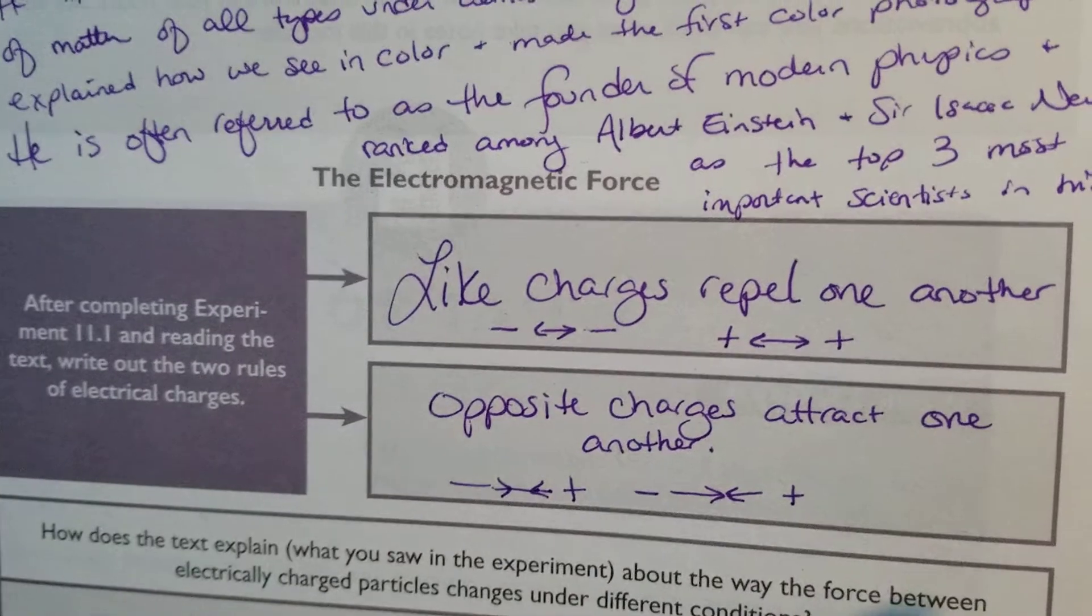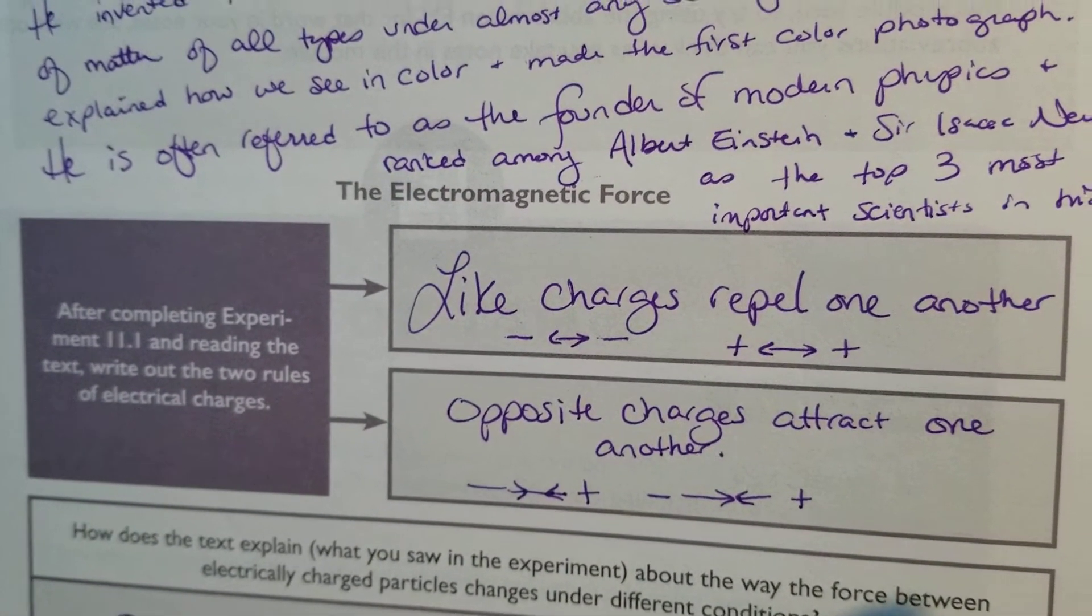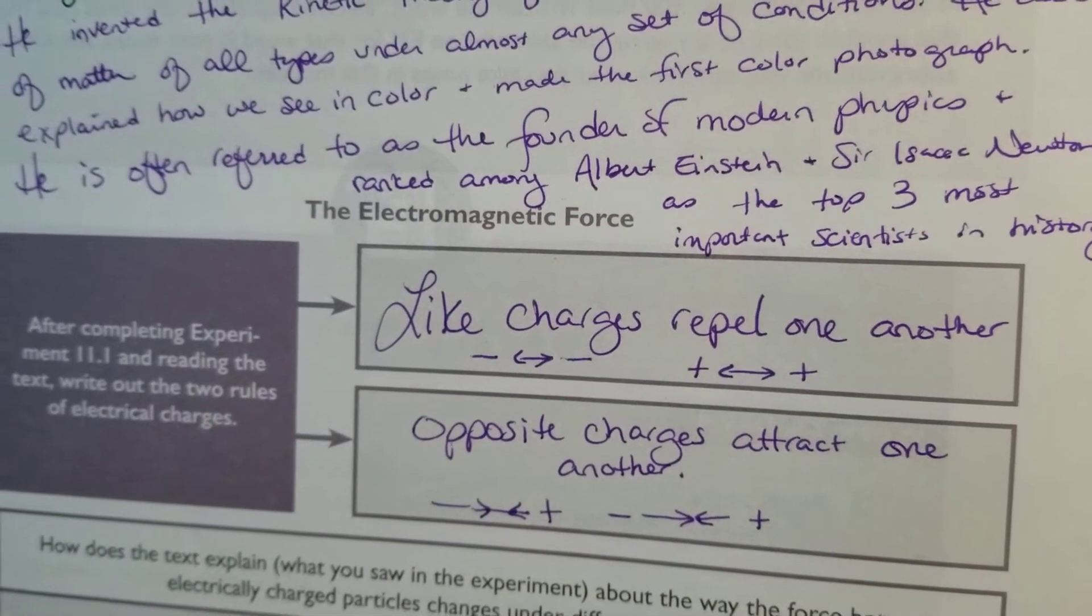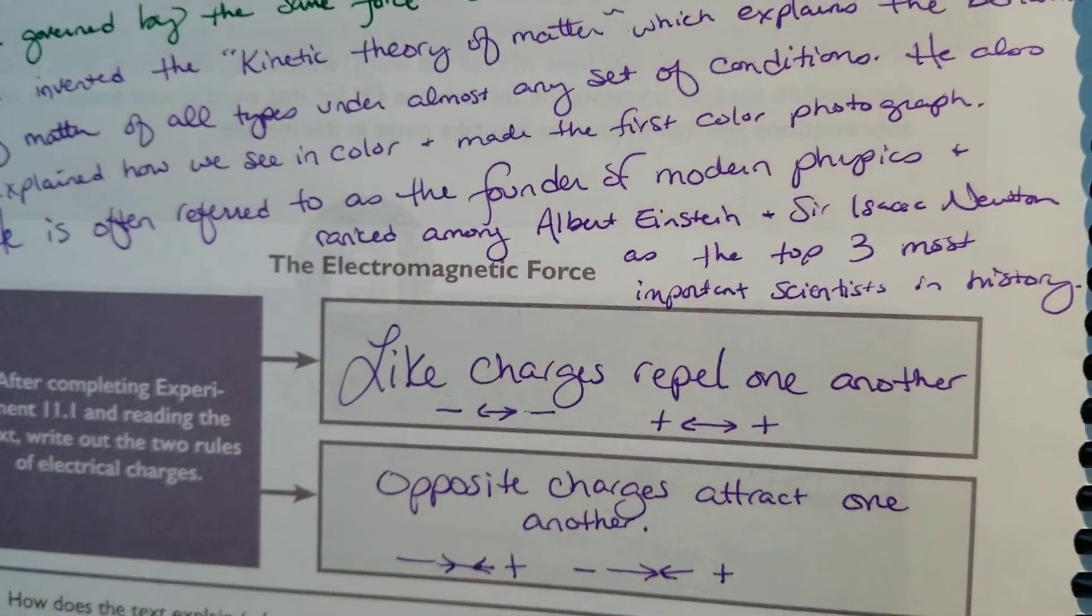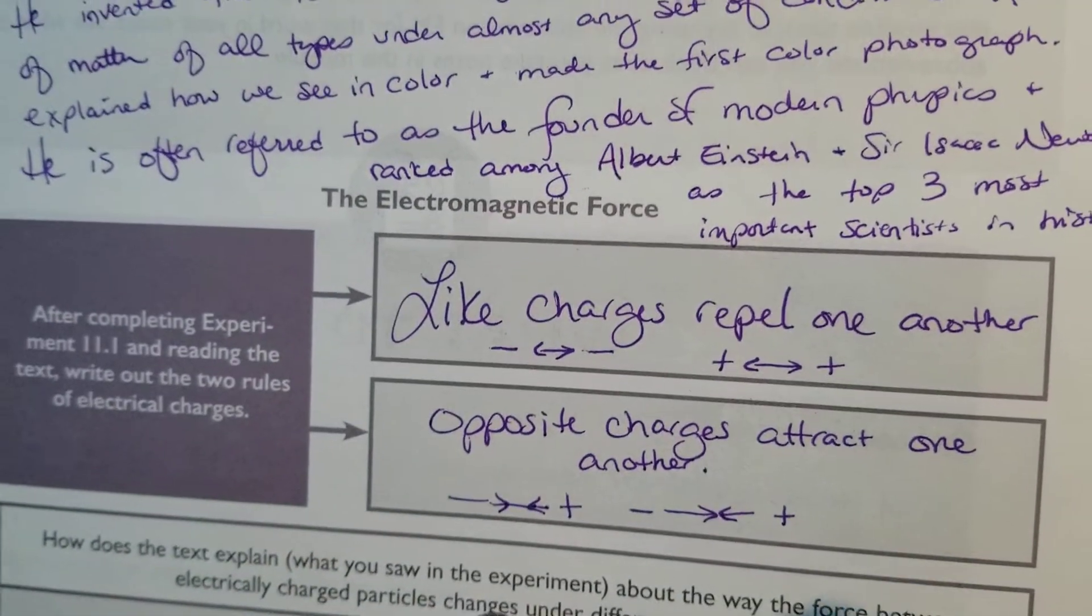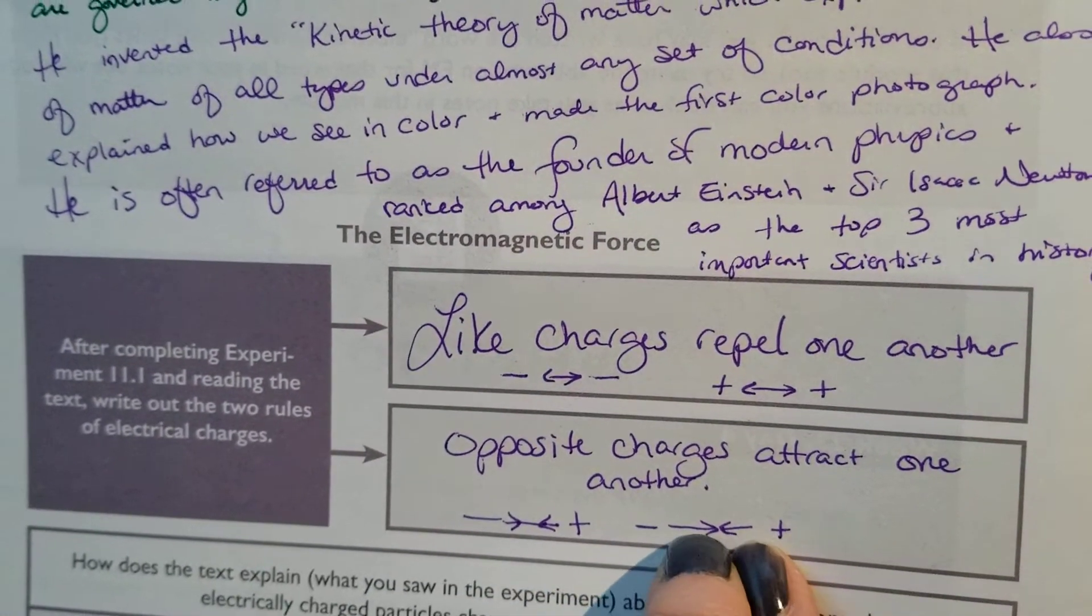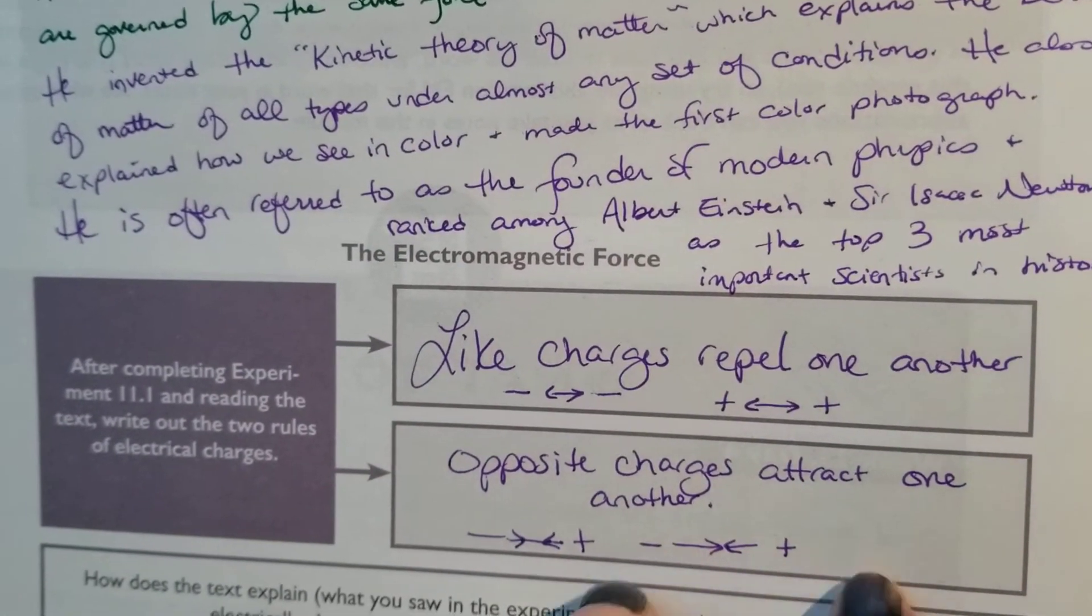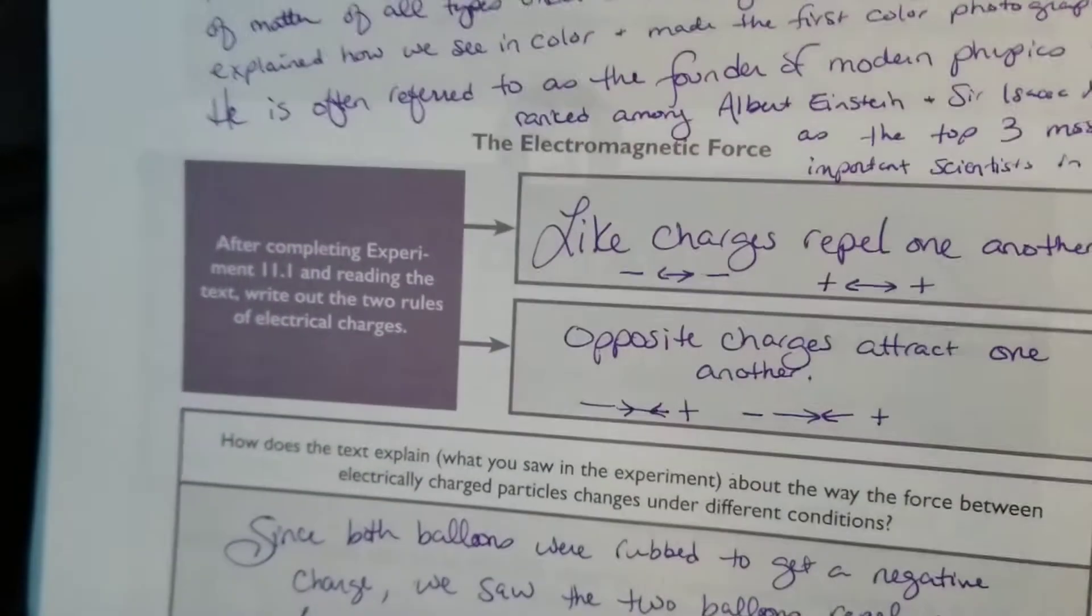After completing Experiment 11.1, what are the two rules of electrical charges? Well, like charges repel one another. They boing away from each other, get away. And opposite charges attract one another. That's where they get that from right there.